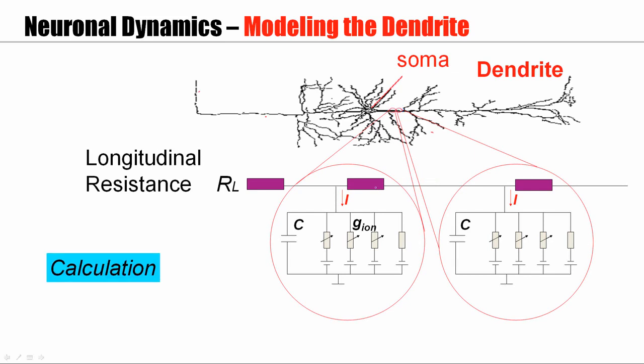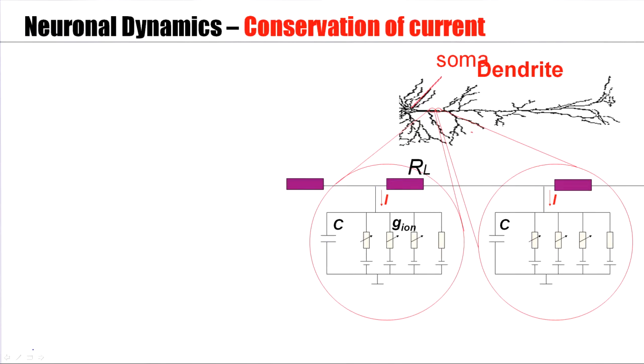Now with these elements, these different segments, is it now possible to write down a model for the dendrite as a whole? And I will lead you now through a few steps of calculation. So let's focus on the current onto this segment here. This is my current I. And because of conservation of current, this current has to split. Some of it goes as a capacitive current onto the capacitor. Other parts go through the different types of ion channel. So the total current is the capacitive current and the sum of all the different currents through the various ion channels.